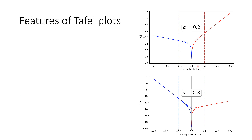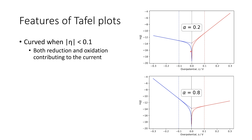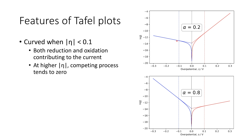Let's look at the features of these Tafel plots. They are curved at small overpotentials because both reduction and oxidation contribute to the current we observe. If we go to higher overpotentials, the competing process tends to zero and we get increasing confirmation to the linear fit. The straight line section will allow us to find our exchange current density J0 from the intercept and alpha from the gradient.